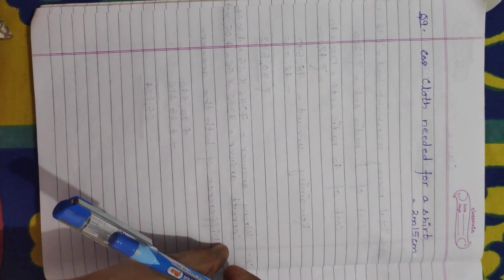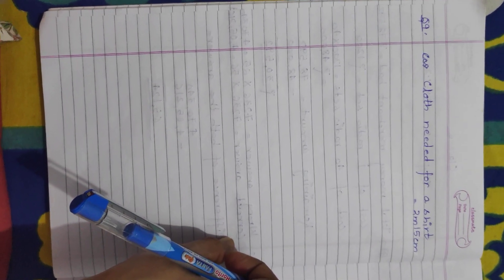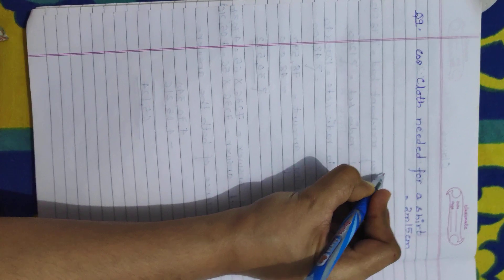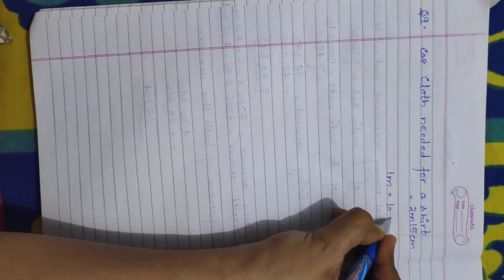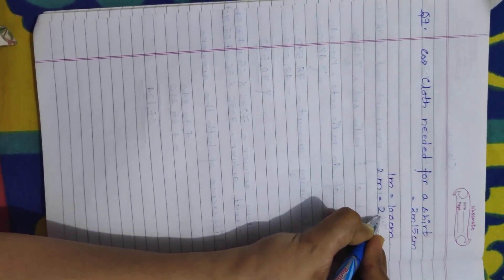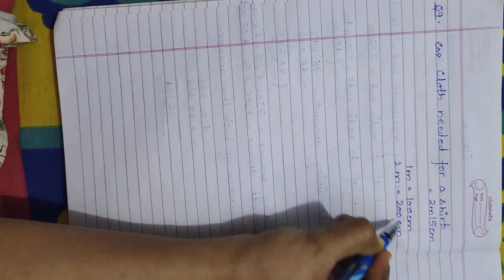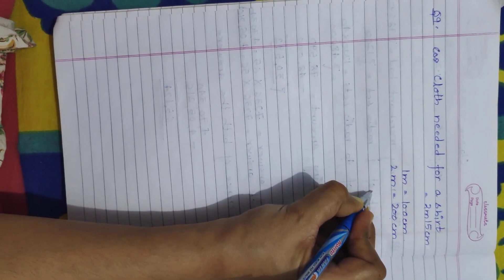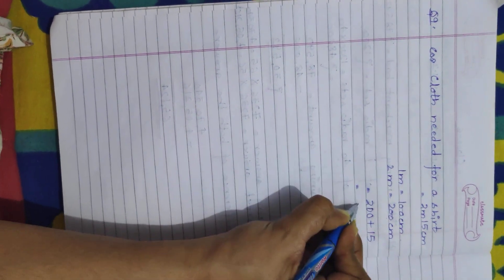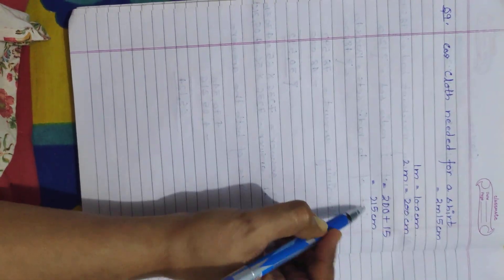The problem here is that the measurement is given in two units — meters and centimeters. We need to convert them to the same unit. We will convert meters into centimeters. We know that 1 meter equals 100 centimeters, so 2 meters will be 200 centimeters. Adding 15 centimeters, the total cloth needed for one shirt is 215 centimeters.